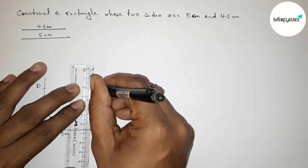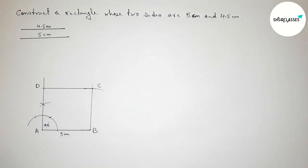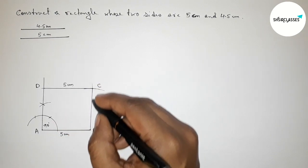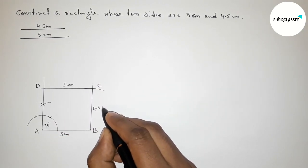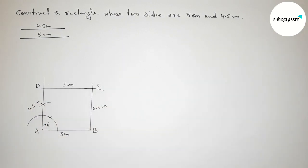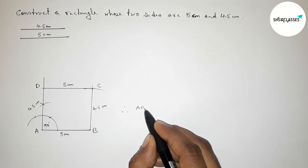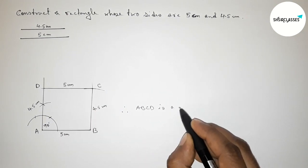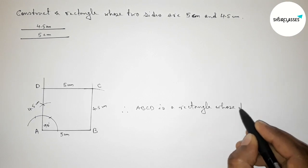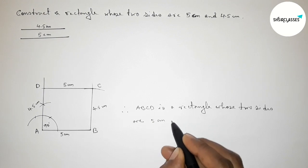Now joining line BC, then joining line CD to complete the rectangle. This side and this side are equal — this is 5 centimeter and this side is 4.5 centimeter, and obviously the opposite sides are also 5 centimeter and 4.5 centimeter. Therefore ABCD is a rectangle whose two sides are 4.5 centimeter and 5 centimeter.